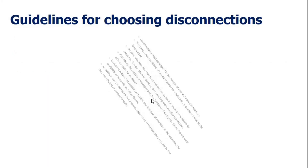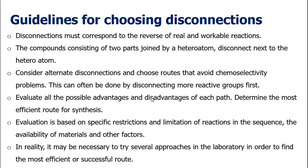Here are a few guidelines for choosing disconnections. A disconnection must correspond to the reverse of a real and workable reaction. For a compound consisting of two parts joined by a heteroatom, disconnect next to the heteroatom — always prefer the disconnection near the heteroatom first. Then consider alternate disconnections and choose a route that avoids chemoselectivity problems, where more reactive groups react first and less reactive groups react last.